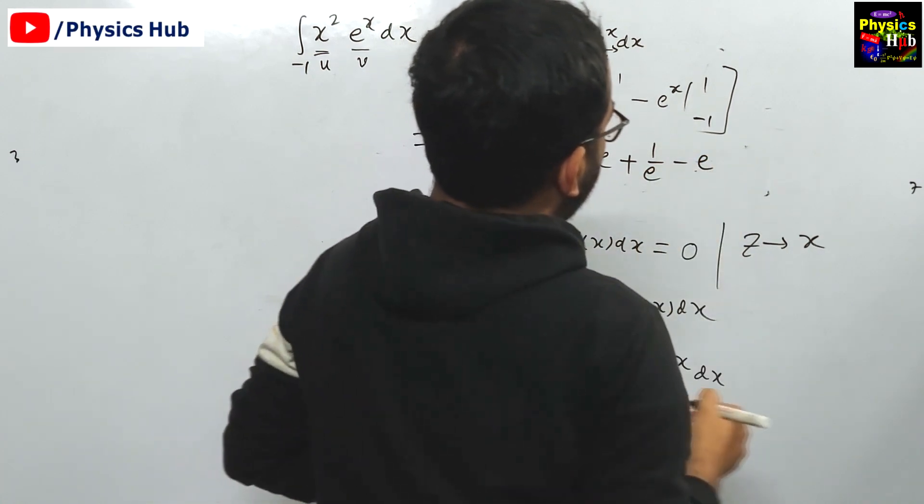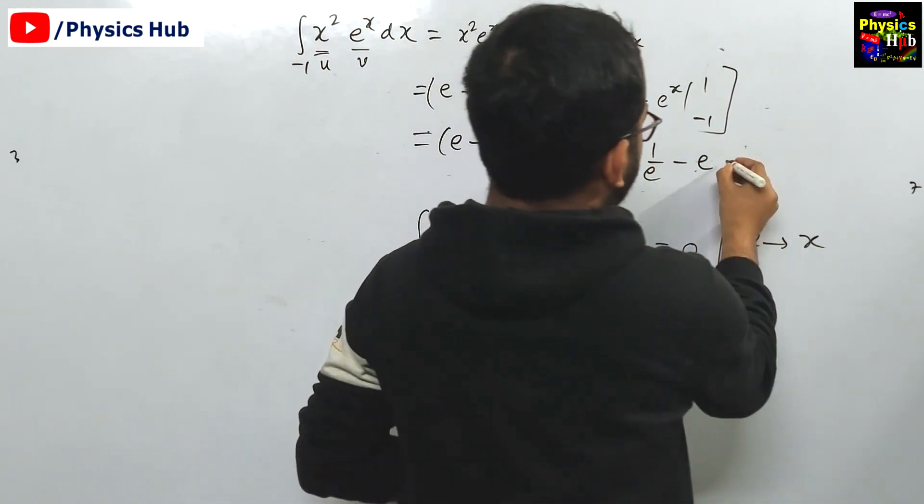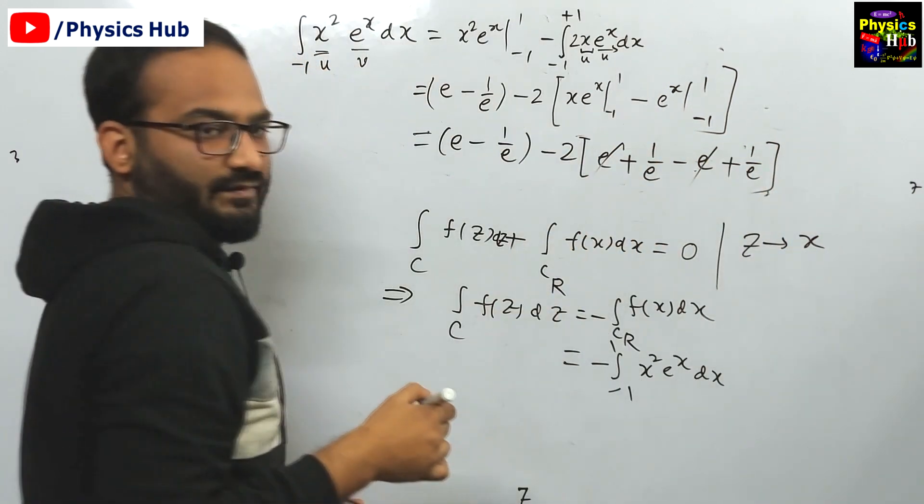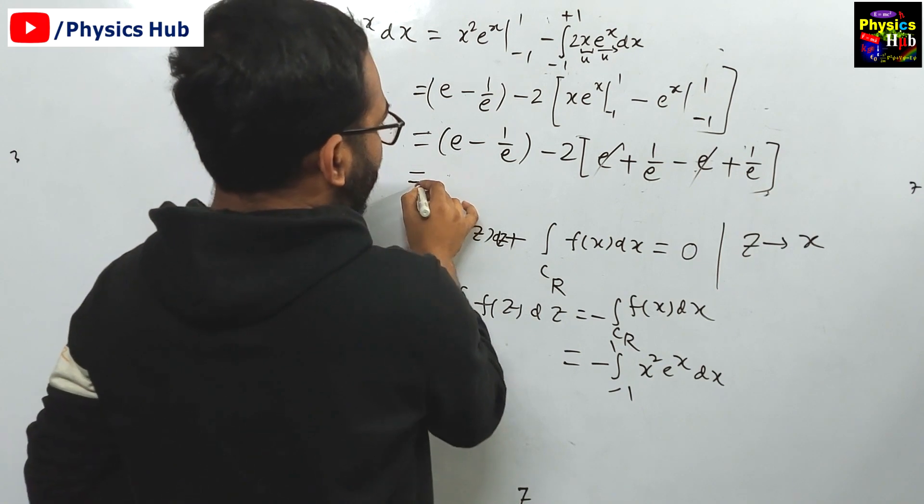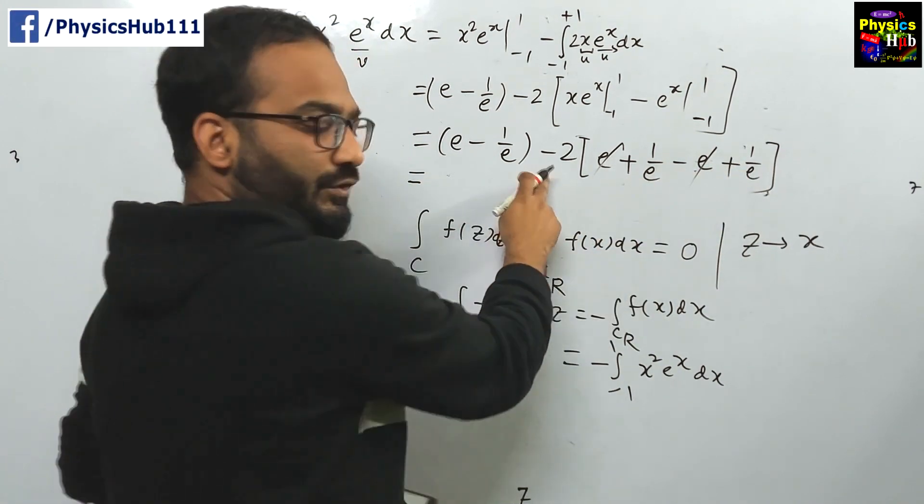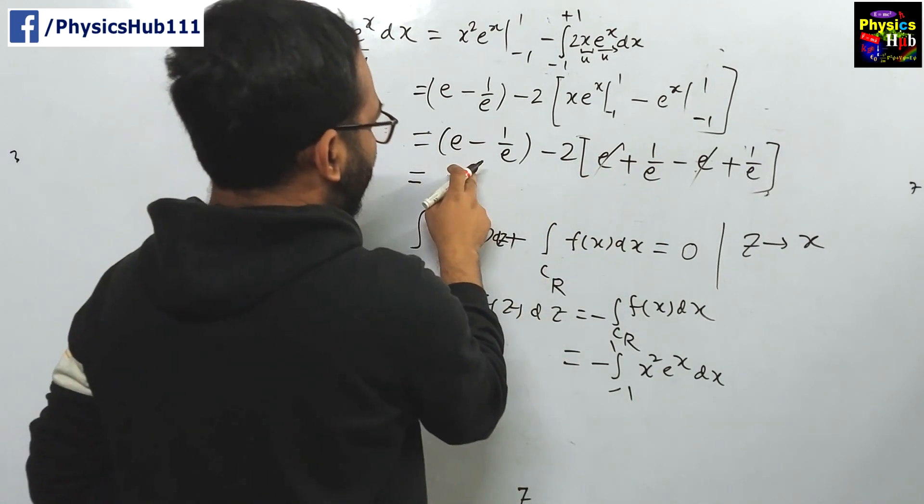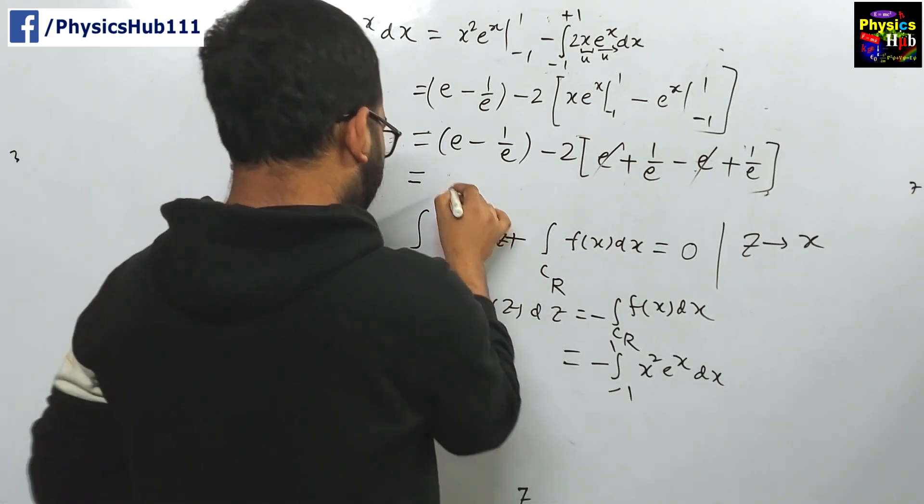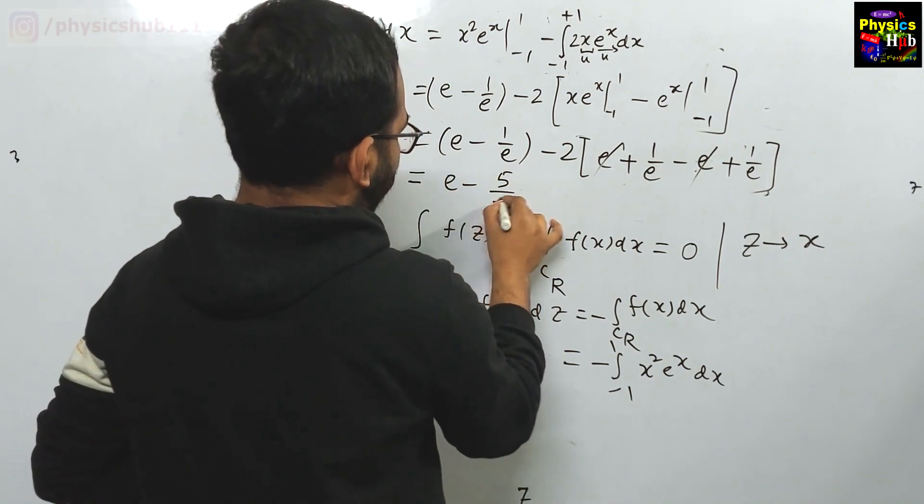Minus e and minus plus 1 upon e. You can see this e minus e plus e is getting cancelled. What we are left with: 1 by e plus 1 by 2 by e minus 2 by e, so minus 4 by e and minus 1 by e, minus 5 by e. What we are getting: e minus 5 by e.